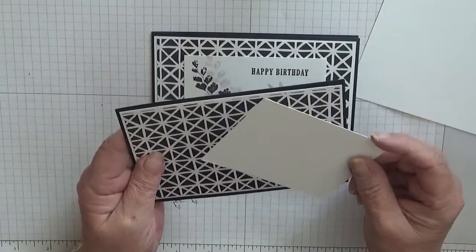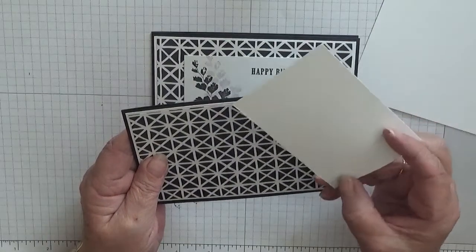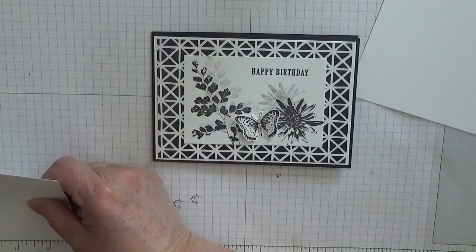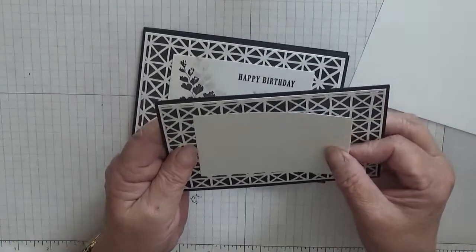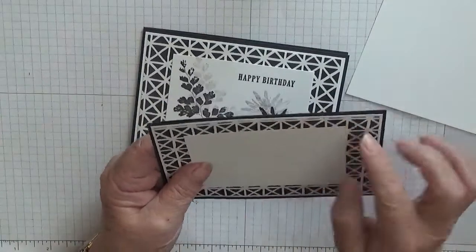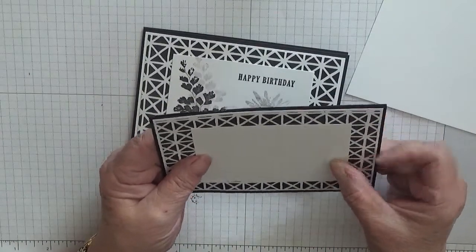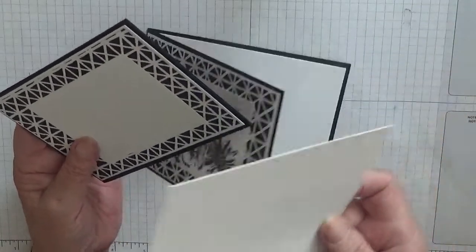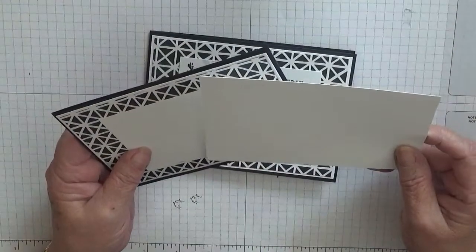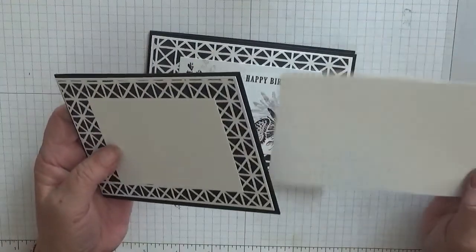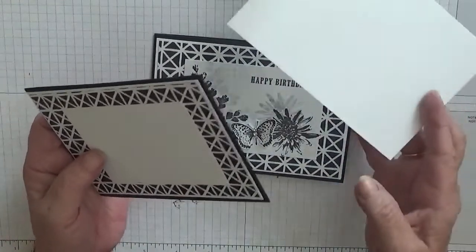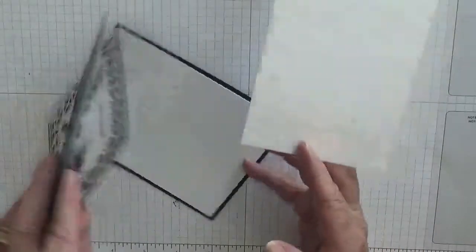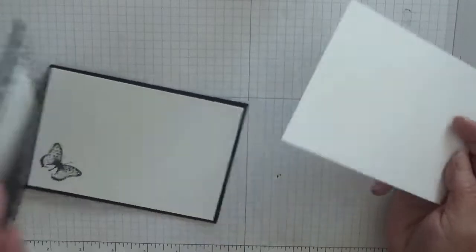I have a piece of white card at four inches by two and three-quarters that we're going to stamp on. And I have another piece of white at five and five-eighths by three and seven-eighths for the inside, and inside I've stamped a butterfly.